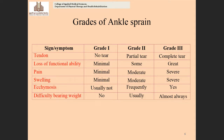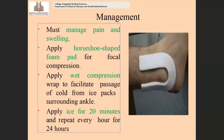Ecchymosis means rupture of small blood vessels around the ankle region. In grade one, you generally cannot find ecchymosis. In grade two, there may be small ruptures. In grade three, there is severe rupture of blood vessels. Regarding weight bearing: in grade two, it is affected, and in grade three, all weight bearing activities are limited.